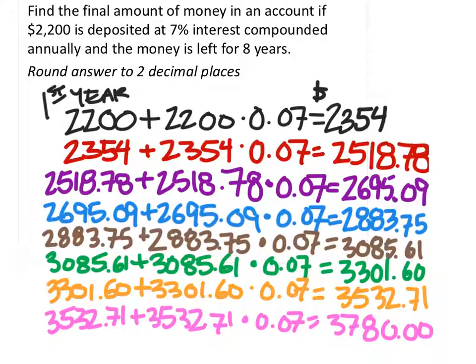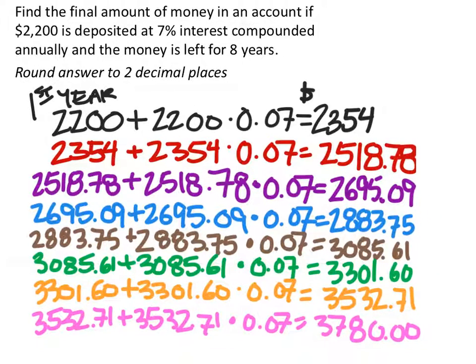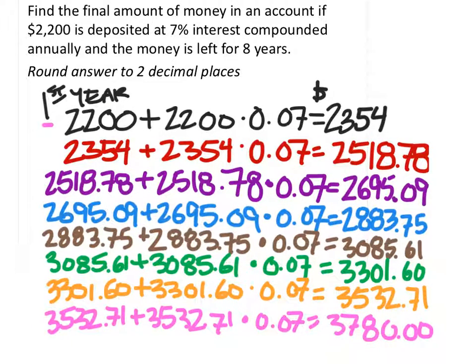All right, so this is what I have for all eight years. Notice we have each year individually. We've got years 1, 2, 3, 4, 5, 6, 7, 8, which is here in pink. So that would be the dollar value of your account after eight years.